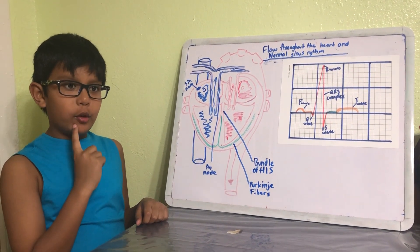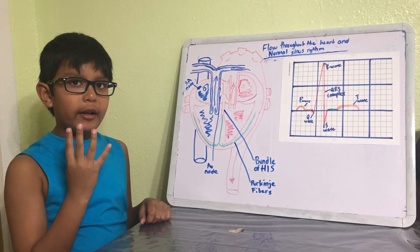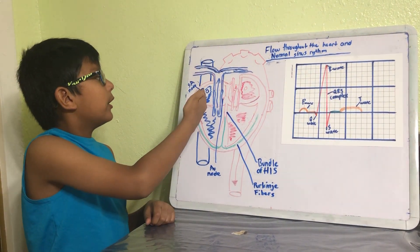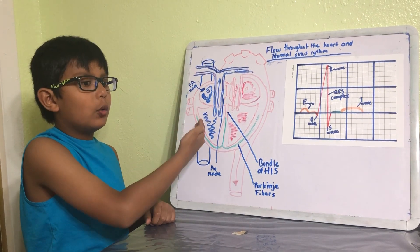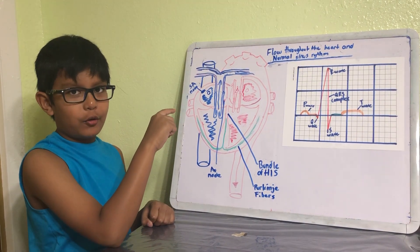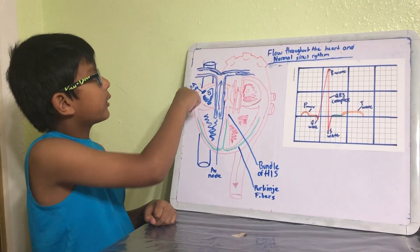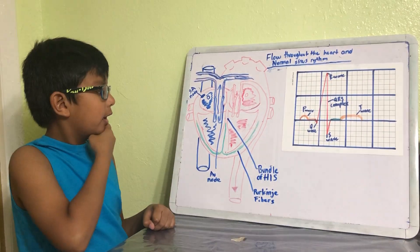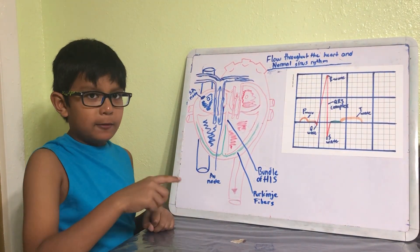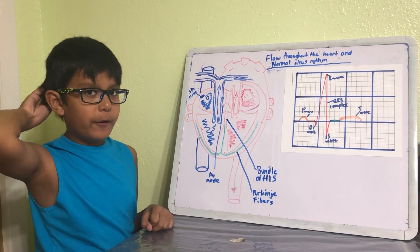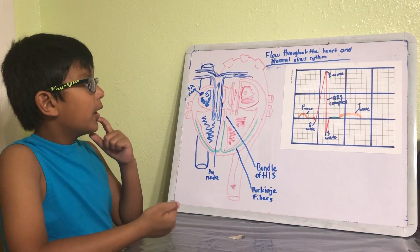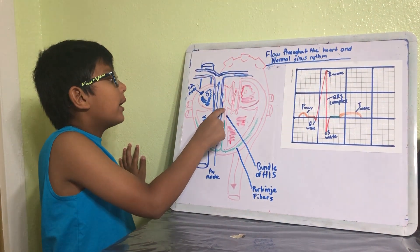Now I'm going to introduce you to four new items in the heart. The first item we have is the SA node, which stands for sinoatrial node. And then over here we have the AV node, which stands for atrioventricular node. Then somewhere behind the septum is the bundle of His.